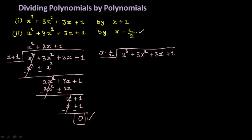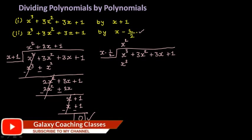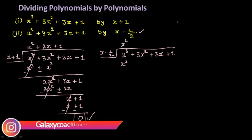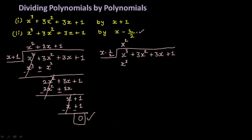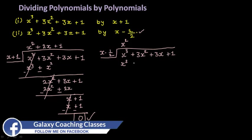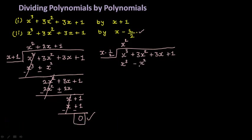Start dividing: x multiplied by x square gives x cube, so keep x square in the quotient. If you don't know, divide x cube by x and keep whatever answer you get. Now multiply x square with minus 1 by 2 — I know directly you will get minus x square by 2. Again change the sign, so x cube cancels, and here you have 3x square plus x square by 2. Let me solve this: 3x square plus x square by 2.